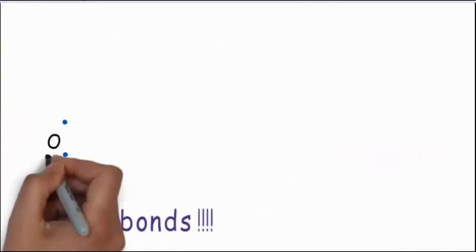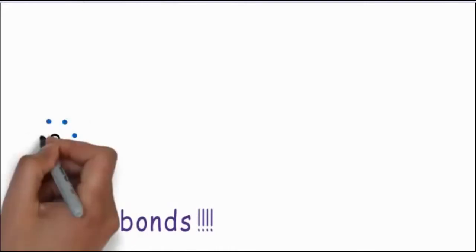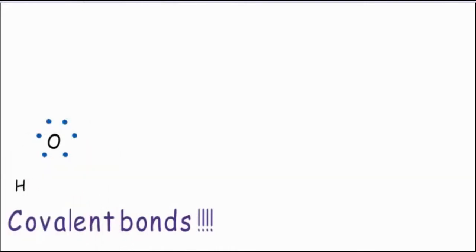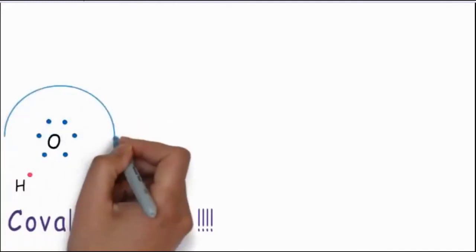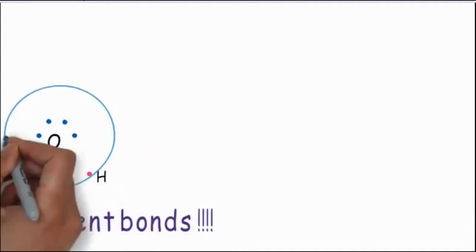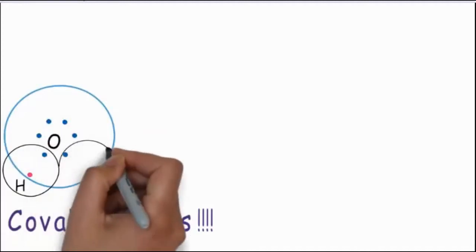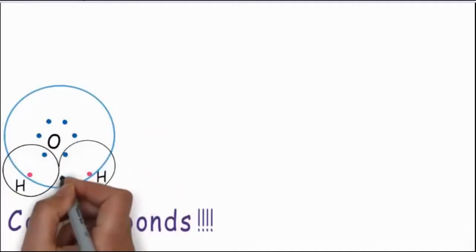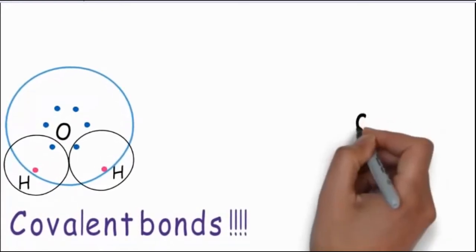Oxygen has 6 electrons in its outermost shell, whereas hydrogen has only one. Oxygen requires 2 electrons so it takes 1 each from the hydrogen, whereas hydrogen requires 1 more so it takes 1 from oxygen. And now we have our H2O molecule ready.